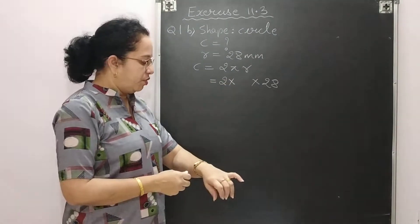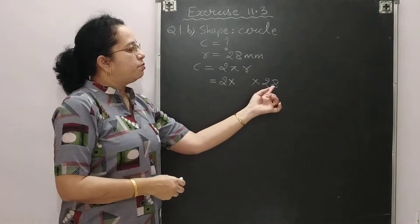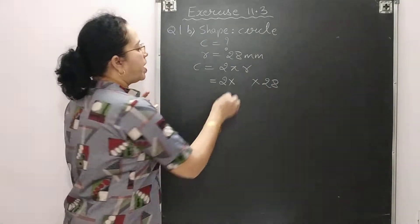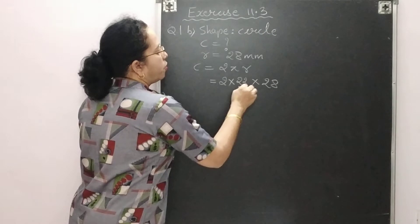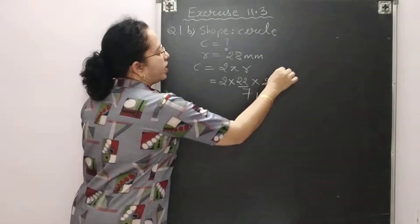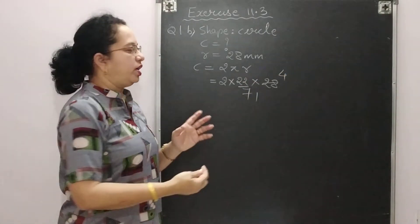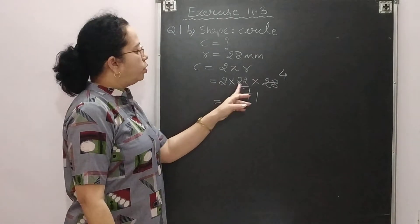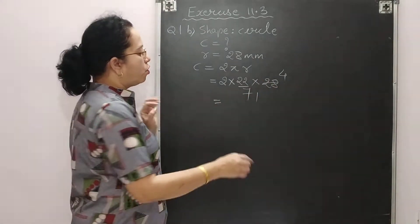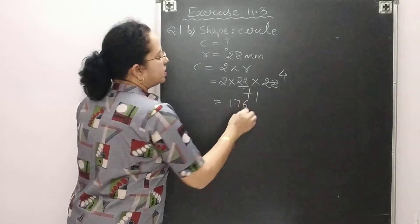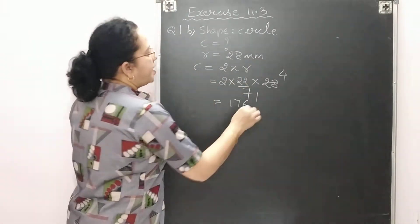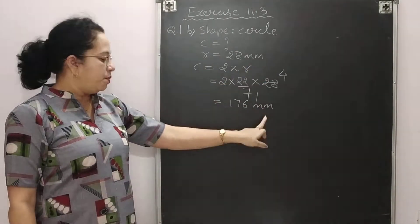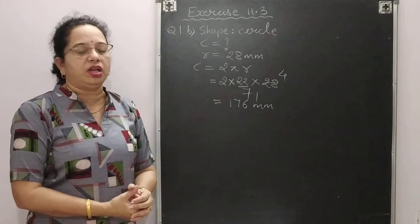If pi is not written in the question, we decide: if the number is divisible by 7, always write pi = 22/7, so we can cancel the 7 with 28. The remaining calculation gives 2 × 22 × 4 = 176. Write the unit — millimeter — as writing the unit is compulsory.